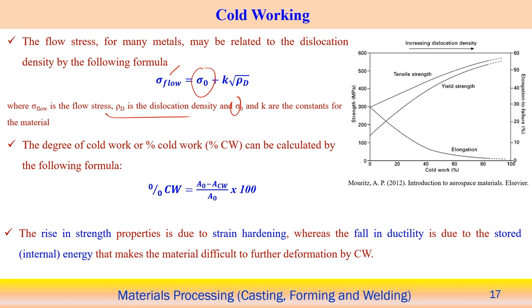A large amount of cold work means more stored energy and more dislocation density created. When more dislocations are available, it becomes very difficult for them to move freely. So overall, increasing cold work reduces elongation but increases the tensile strength and yield strength of the material.